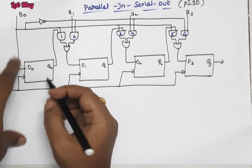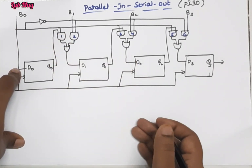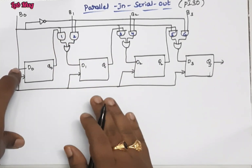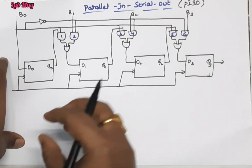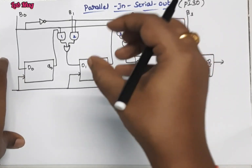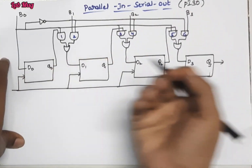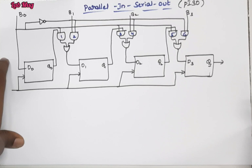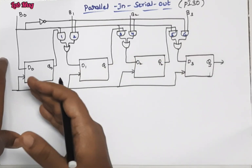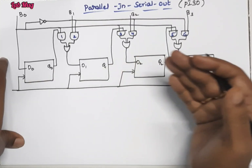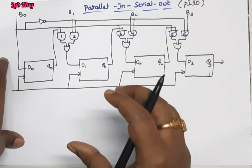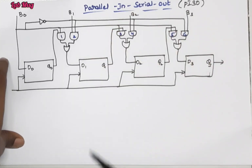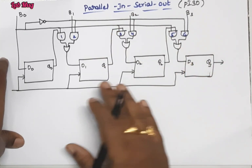First, parallel means we are getting the individual outputs. But here, parallel input means we are giving parallel inputs and we are getting the same output continuously, one by one passing the values. Parallel input means we are taking values individually.